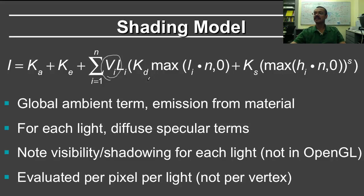Then you have the diffuse color, KD, times max of L dot N and 0. Li is the direction to the light, plus the specular times max of H, which is the half angle, dot N comma 0, and then S is the shininess. So this is the half angle.